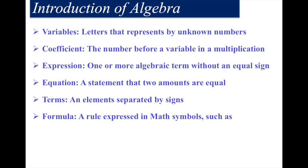What is an equation? A statement that two amounts are equal is known as an equation. A term is an element separated by signs such as plus or minus. A formula is a rule expressed in mathematical symbols.